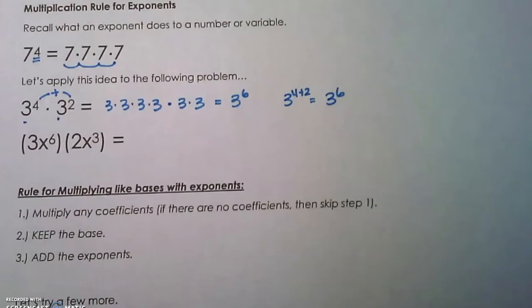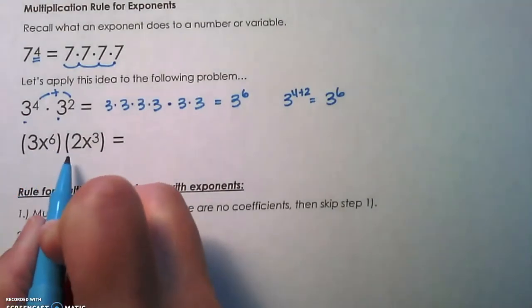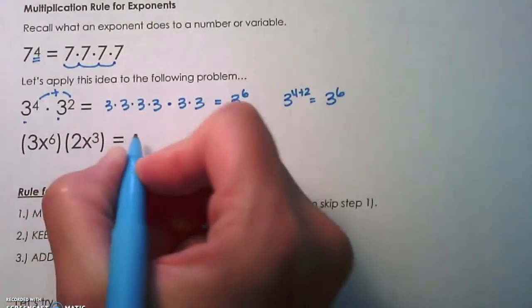And again, you can see how that works when you write it out in expanded form. Let's apply the same idea to 3x to the 6th times 2x cubed. The 3 and the 2 are coefficients.